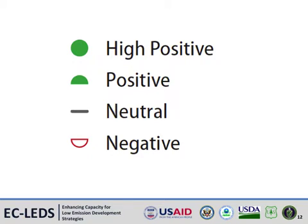Users can tailor the scoring framework. For instance, in Zambia, stakeholders designed the framework to include only positive, neutral, and negative scores, and excluded high positive. In this circumstance, stakeholders found it difficult to differentiate and support, with a high degree of confidence, a positive score versus a high positive score. Users should be careful to design the framework in a way that is unbiased and provides clear justifications for scoring various actions.